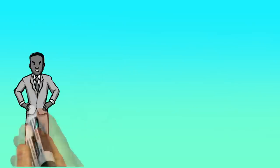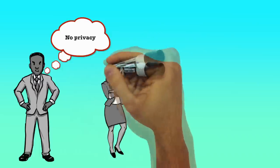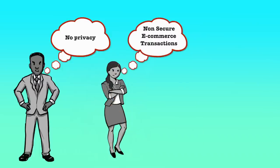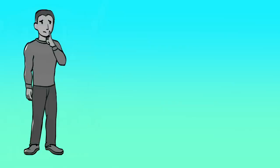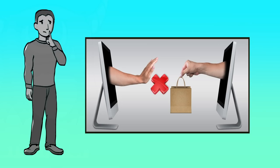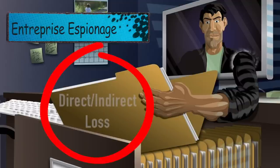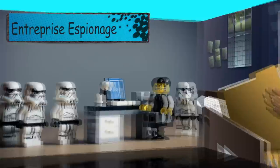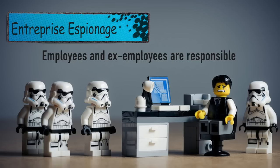Security threats adversely affect individuals — they lose their privacy and confidence in using the Internet for e-commerce transactions, and lose confidence in public safety measures if those measures still do not protect them. If individuals lose confidence, the business of enterprises involved in e-commerce is also affected. Enterprises lose millions of dollars due to Internet fraud. Enterprise espionage causes both direct and indirect losses, and unfortunately many employees and ex-employees are responsible for it.